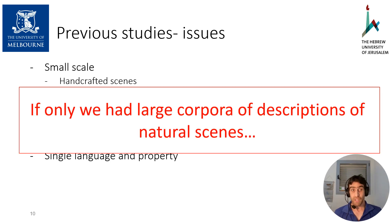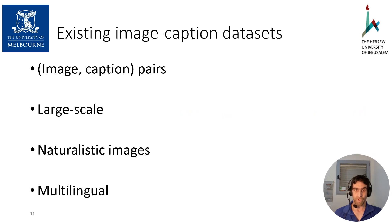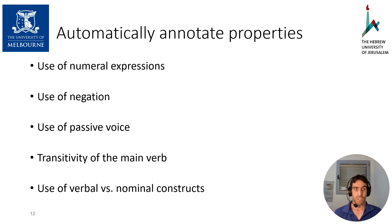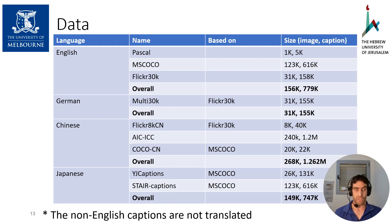We could bridge these gaps if only we had large corpora of descriptions of natural scenes. Well, we do. There are many image caption datasets out there in different languages that can be exploited for this exact purpose. To exploit the scale of these datasets, we developed automatic tools for annotation of five linguistic properties: use of numeral expressions, use of negation, use of passive voice, transitivity of the main verb, and use of verbal versus nominal constructions. The number of images in our study is approximately 600,000, and the number of captions is 3 million. An important note is that we only include datasets with captions generated by native speakers and not translated from English.